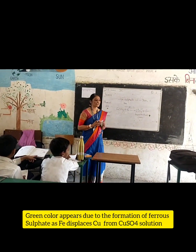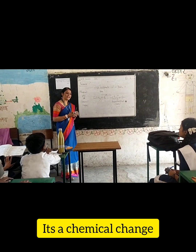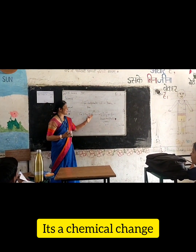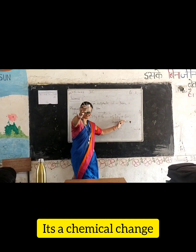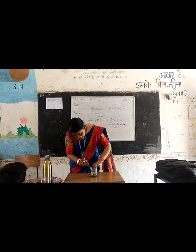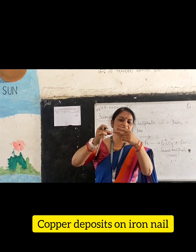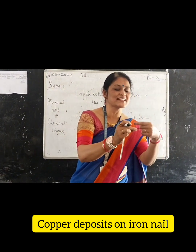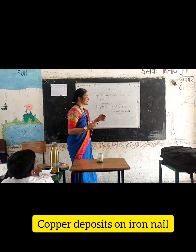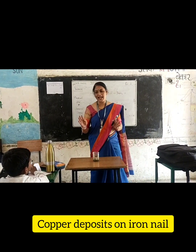Is it a physical change or a chemical change? Copper sulfate which was blue in colour had iron added to it. Ferrous sulfate is formed which is green in colour, plus copper. Can you see copper deposited on the outside of the iron nail? Can you see the brown colour copper? Yes. So this change is a chemical change. Did you understand? Yes ma'am.